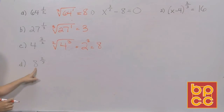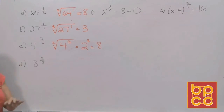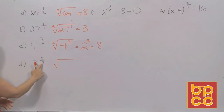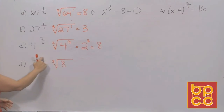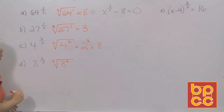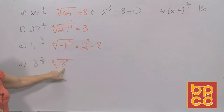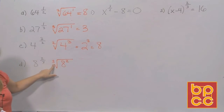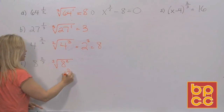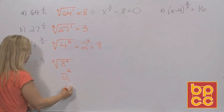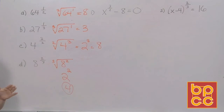For 8 to the two-thirds, the denominator is 3, so this is a cube root. The numerator exponent is 2. Cube root of 8: what number multiplied 3 times gives you 8? That's 2. Then 2 squared is 4.